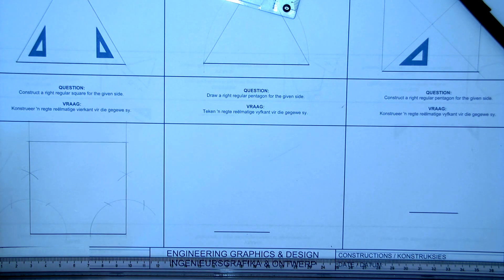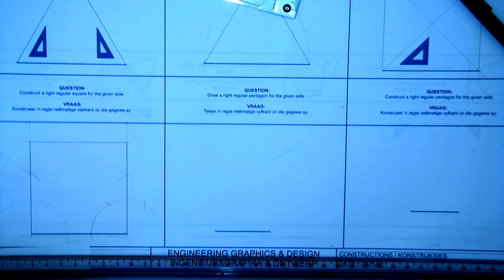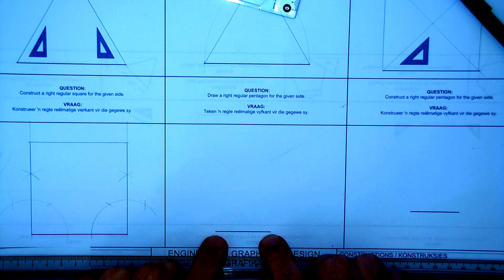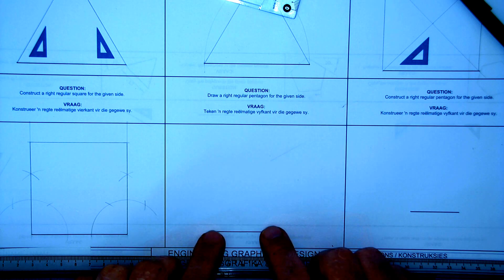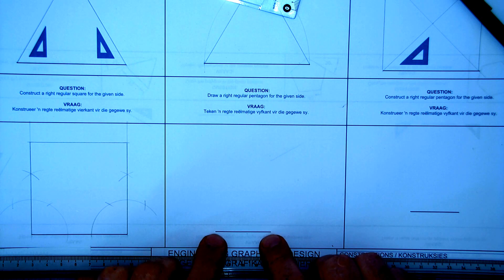Now the first step is they give you the line. They tell you about the given line of your pentagon and this will be the bottom side of it. Now there are things that you should know about regular shapes. Regular shapes means your side lengths are always all the same and your corners are always the same. They don't differ.